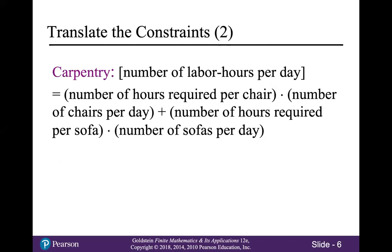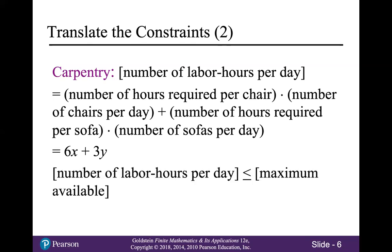Our first constraint represents carpentry. The number of labor hours per day is going to come from the number of hours required per chair times the number of chairs, plus the number of hours required per sofa times the number of sofas. Looking back at your table, each chair required six hours of carpentry and each sofa required three hours. So that translates into 6X plus 3Y as the number of labor hours spent manufacturing X chairs and Y sofas. What makes this a constraint is that the maximum number of labor hours available for carpentry was 96, so 6X plus 3Y has to be less than or equal to 96.